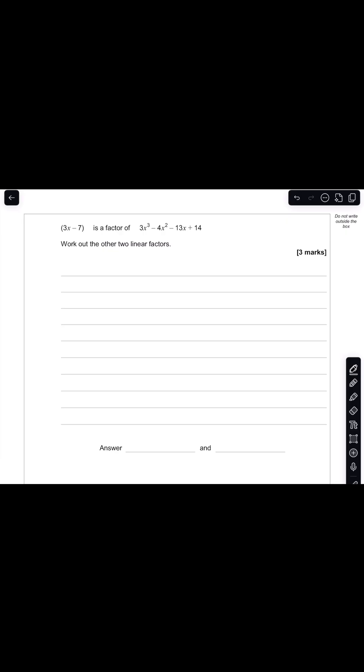So in the first question we are told that 3x minus 7 is a factor of 3x cubed minus 4x squared minus 13x plus 14. Work out the other two linear factors.